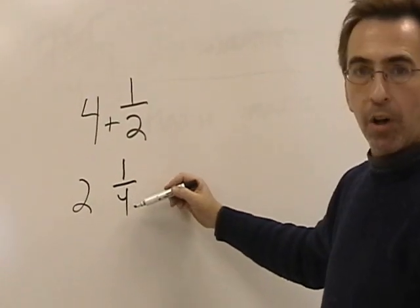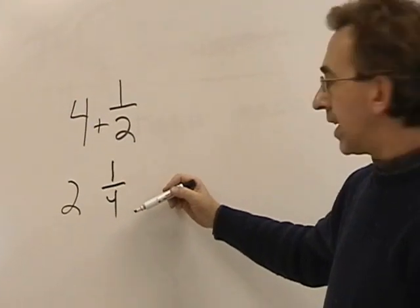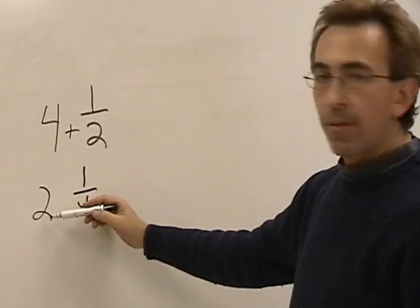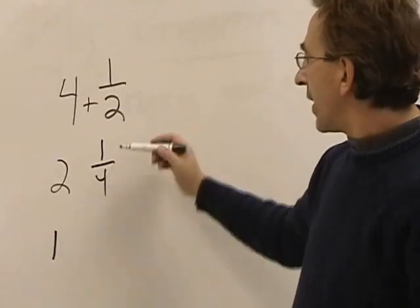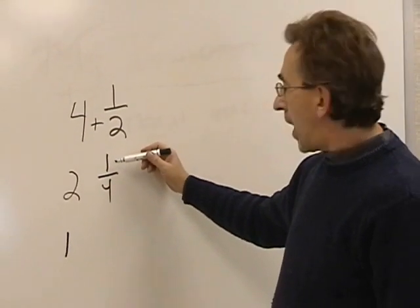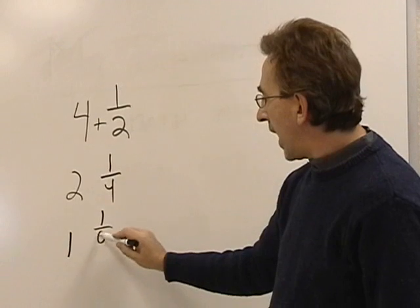Let's take 2 and 1 fourth, half of that again to see how it works. Half of 2 is 1, top stays the same, double the bottom, 1 eighth. So half of 2 and 1 fourth is 1 and 1 eighth.